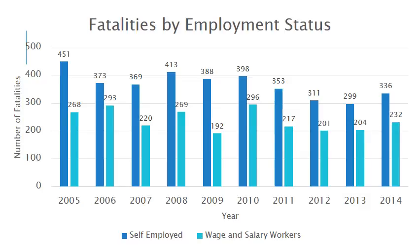This chart shows the number of fatalities in agriculture with relation to employment status. The two categories were self-employed individuals and wage and salary workers. Agriculture has a higher proportion of self-employed individuals than any other industry, and this chart shows that the number of fatalities is higher among self-employed agricultural workers than wage and salary workers. The overall trend appears to be a decrease but with fluctuations throughout the 10-year period.